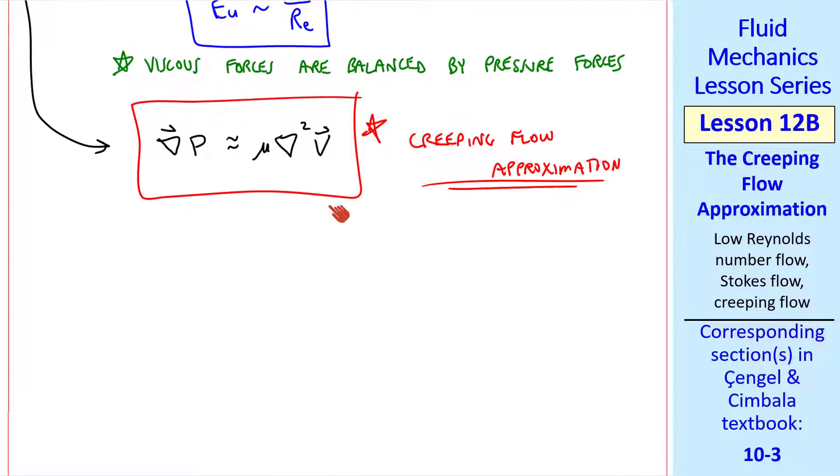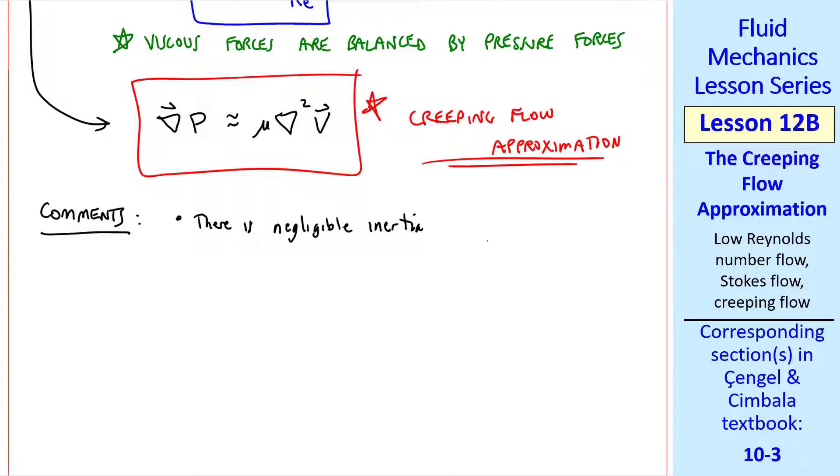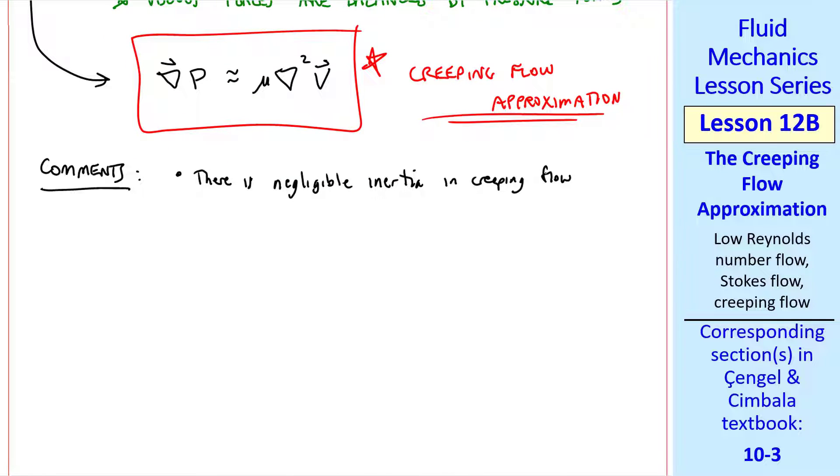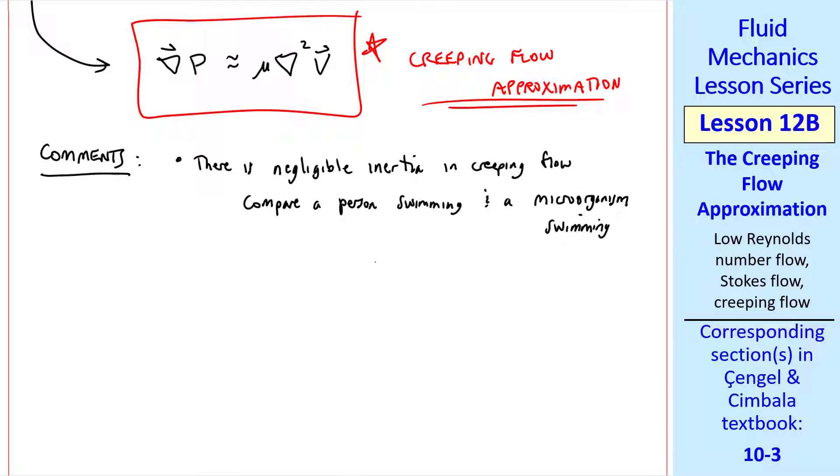I make some comments about this equation. As we already said, there's negligible inertia in creeping flow. For example, compare a person swimming and a microorganism swimming. When you swim, you can glide. You push yourself off the wall or you do some strokes and stop and you'll glide through the water. A microorganism, on the other hand, cannot glide.